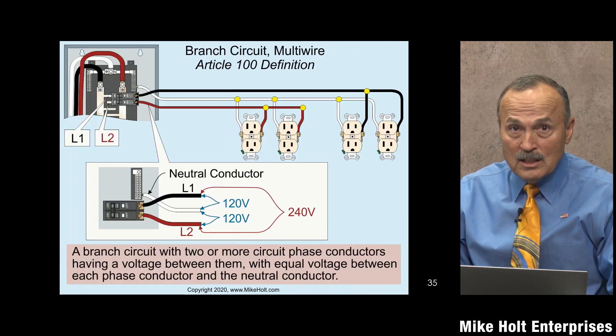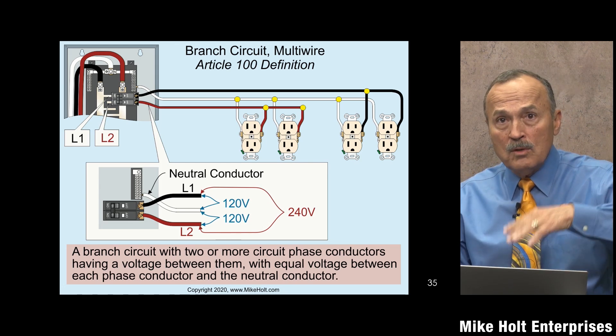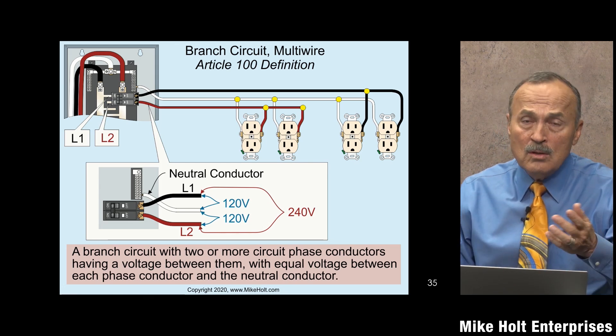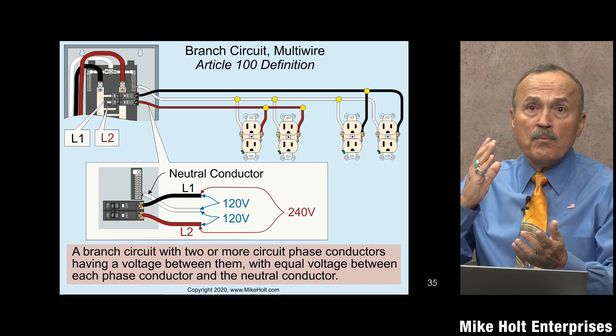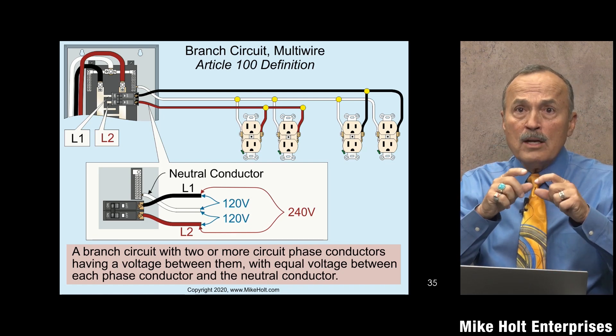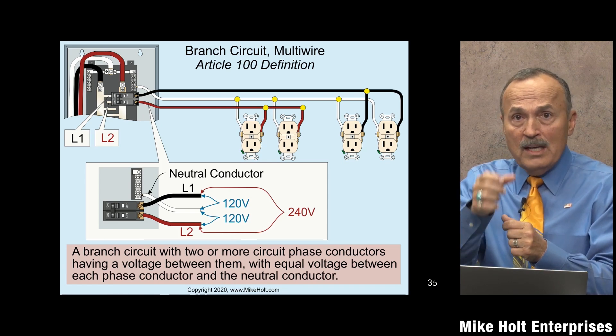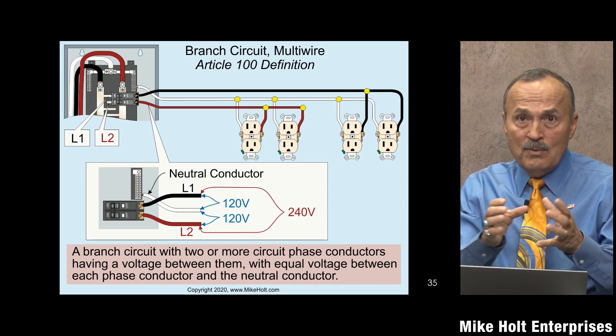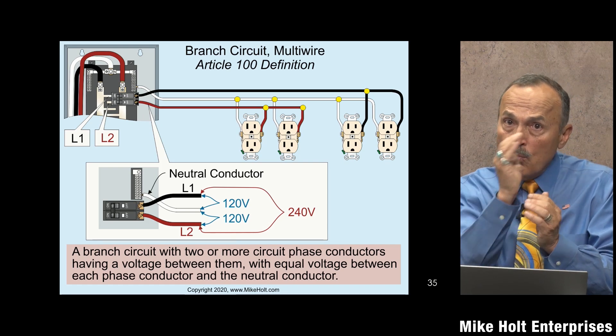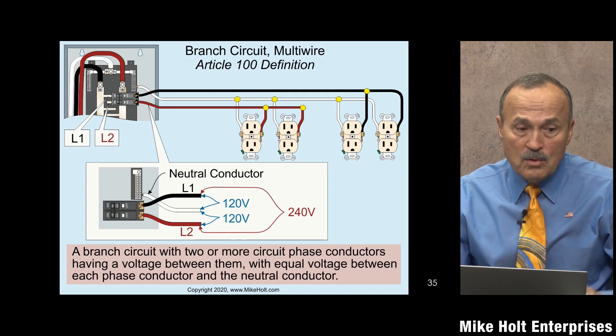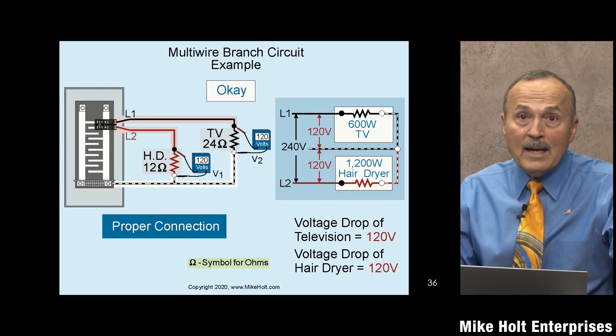So we know what a multi-wire branch circuit is: originating from the same panel, two hots and a neutral, or three hots and a neutral. The key rules are: all conductors must come off a common breaker or breakers with handle ties, and you must group the phase conductors and neutral conductors together — unless it's obvious — so you can trace those wires to a breaker. As Jennifer noted, grouping enables lockout/tagout so you can disconnect all phase conductors simultaneously.